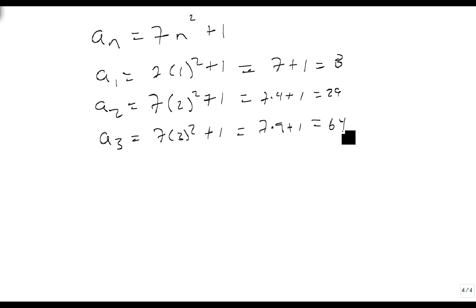And it shouldn't take very much work to note that 29 divided by 8 is not the same as 64 divided by 29. I can't multiply 8 by any integers to get 29, and whatever it is, 3 point something, this is too small here, so these are not the same, so this is not geometric.